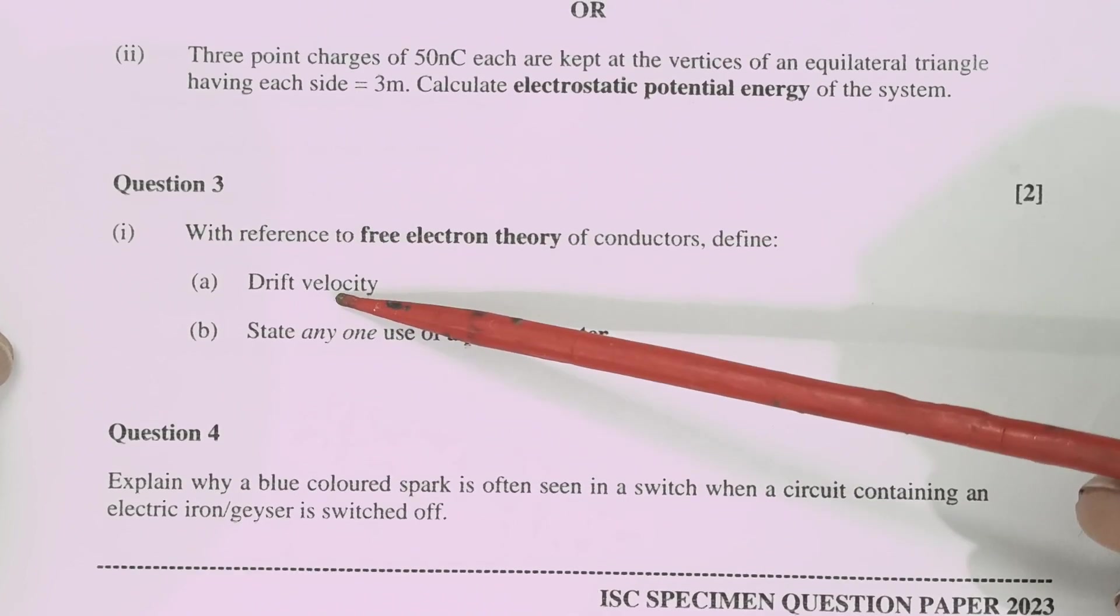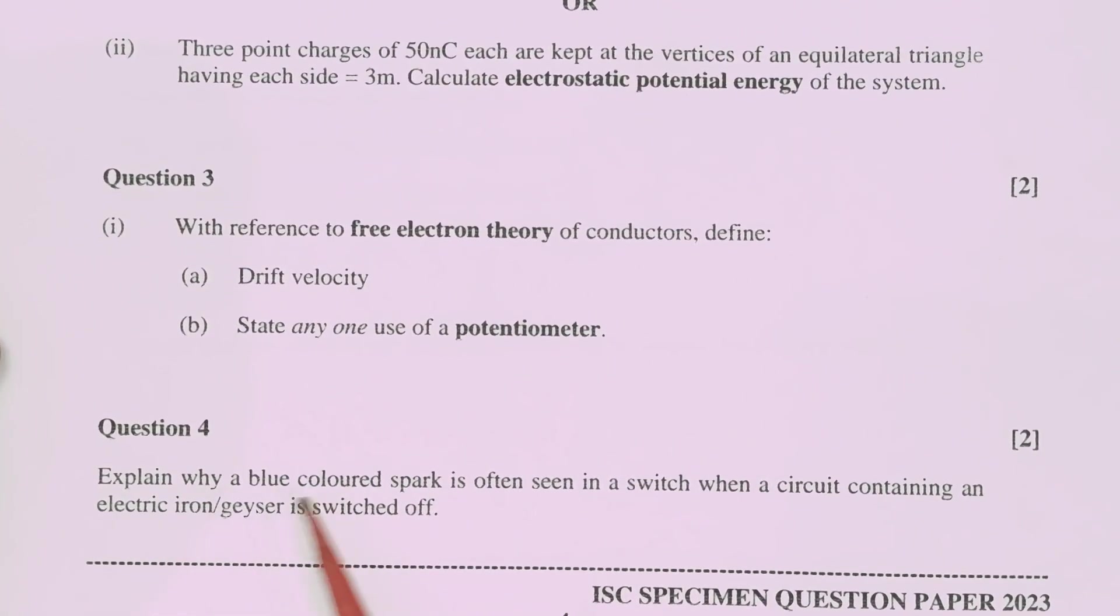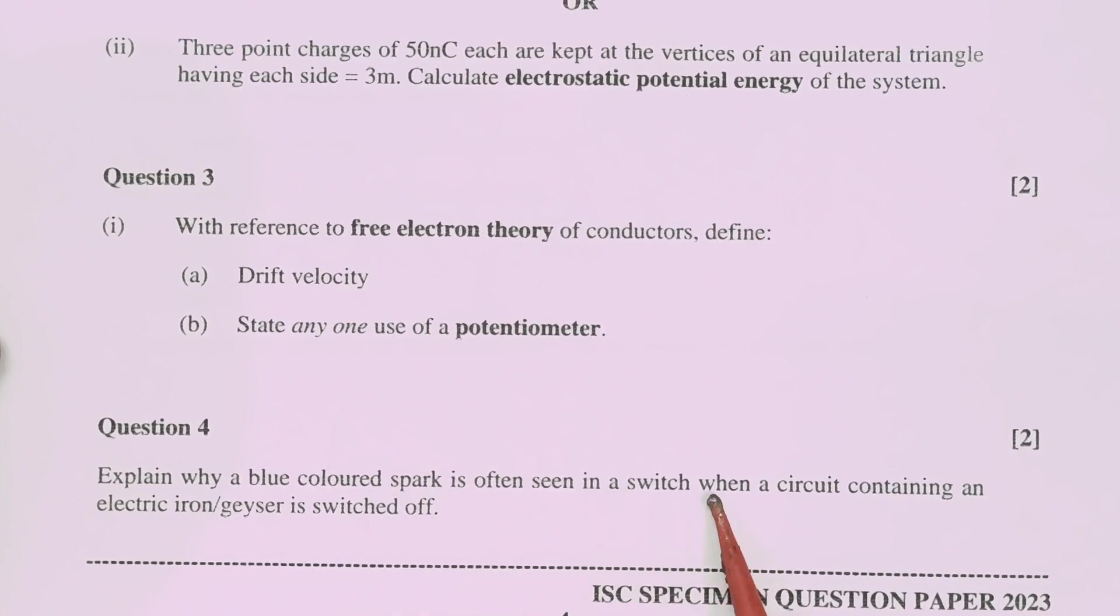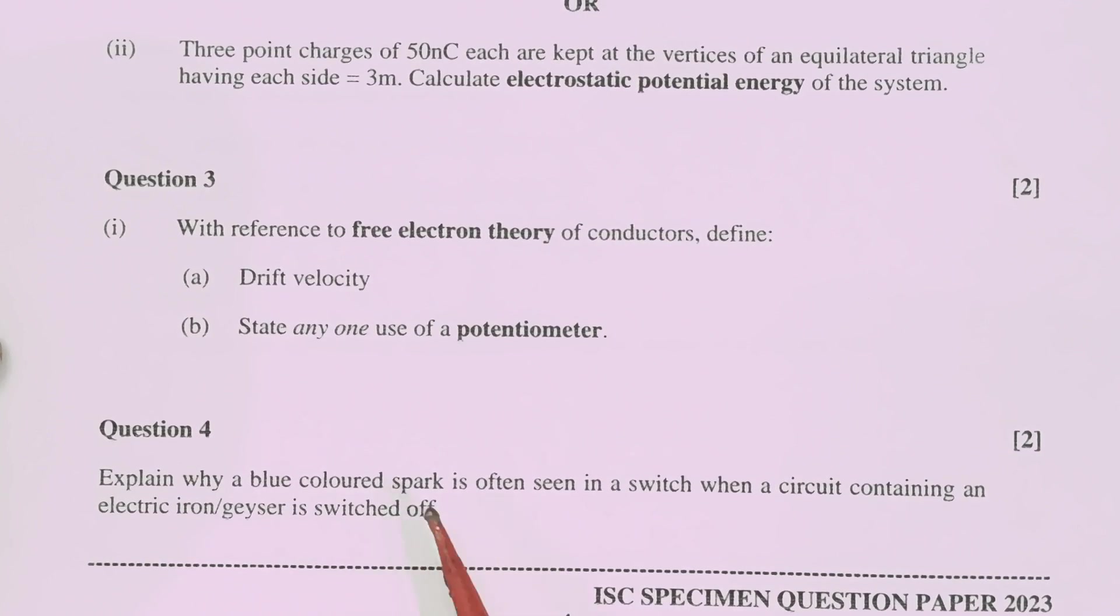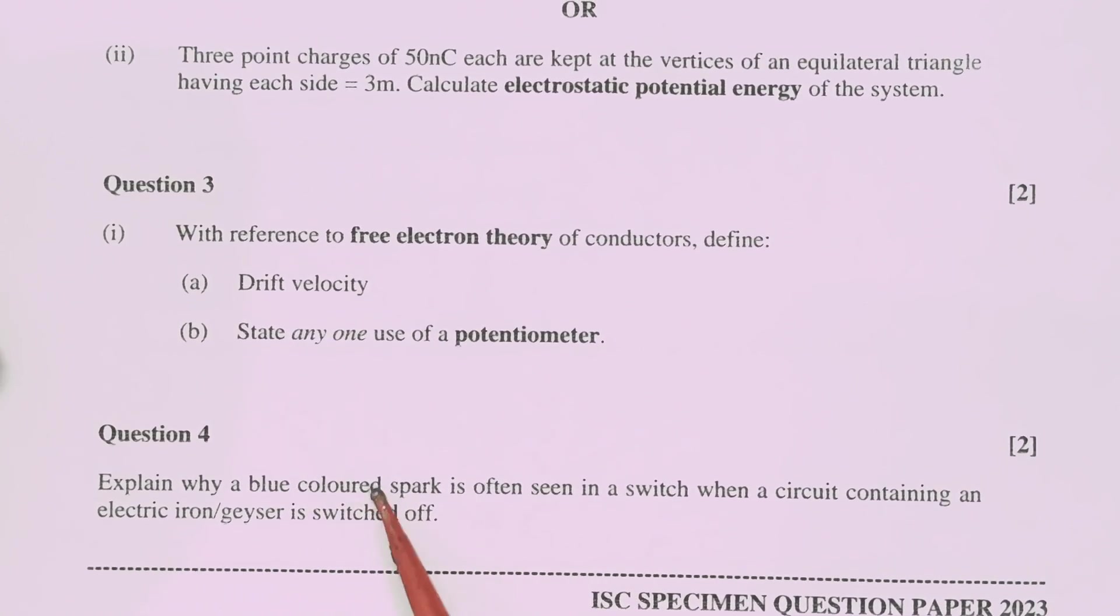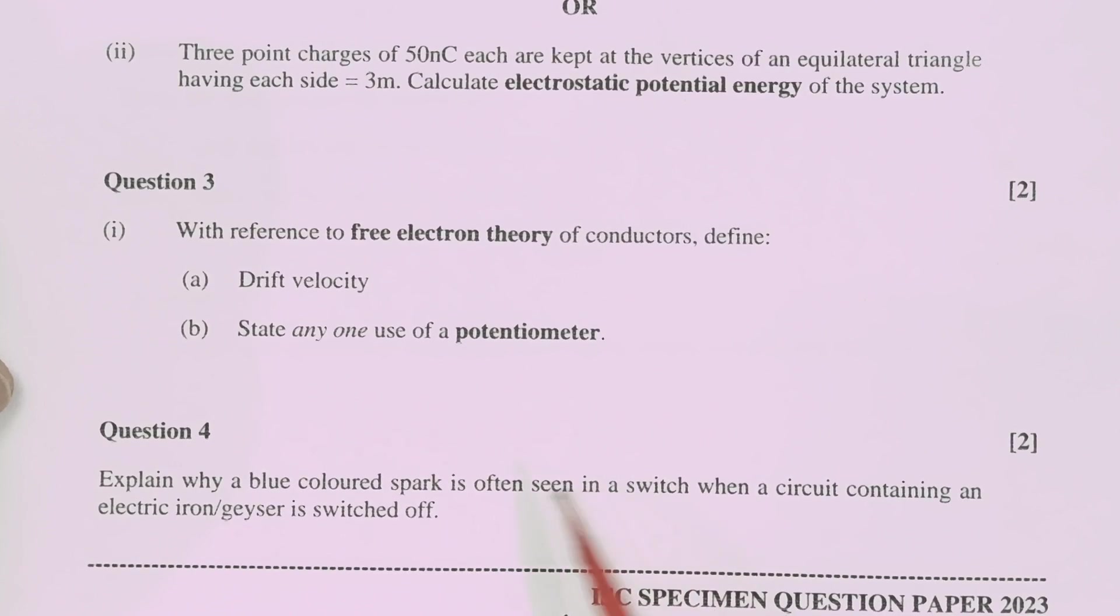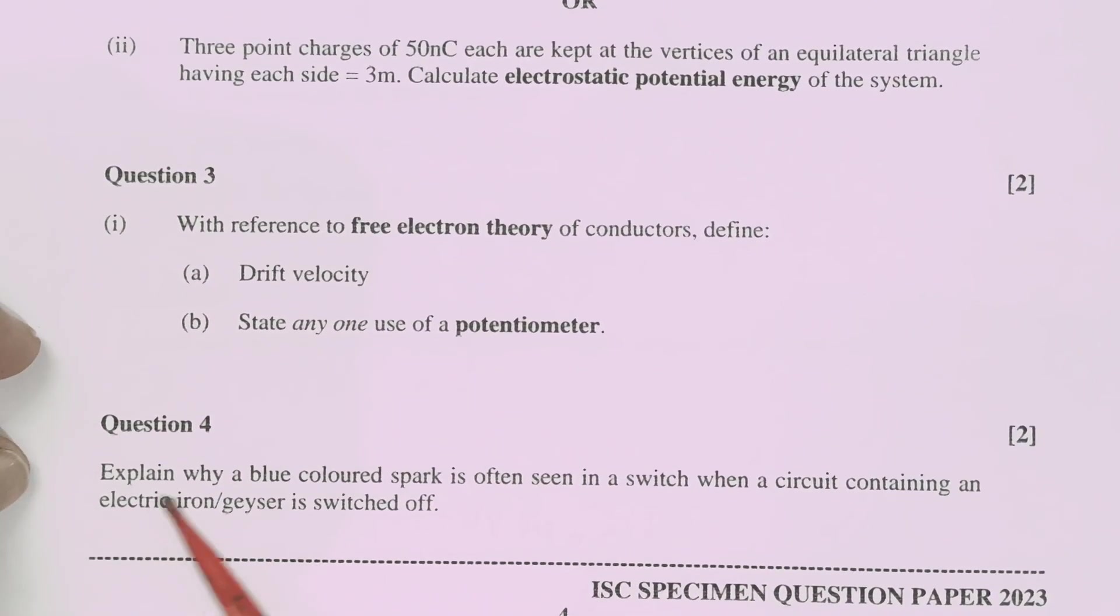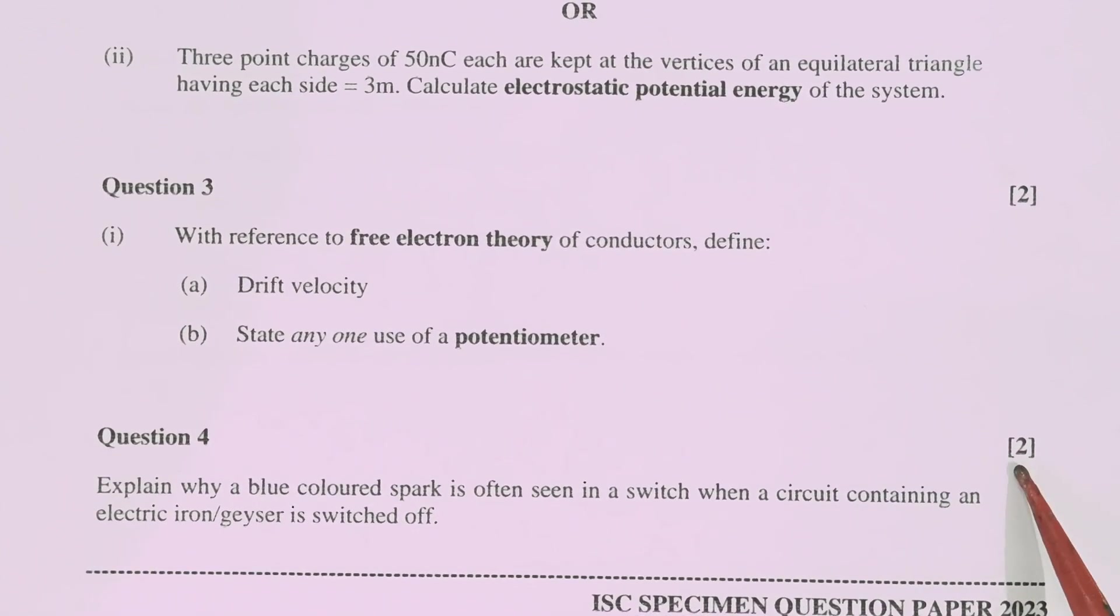You need to answer in one line or in two lines maximum. And in this question why blue color spark is often seen in a switch when a circuit containing an electric iron or geyser is switched off? That means they are asking why spark like welding is observed in the switch when it is put on or off? But that answer also you have to write in maximum two lines. It is two marks question.